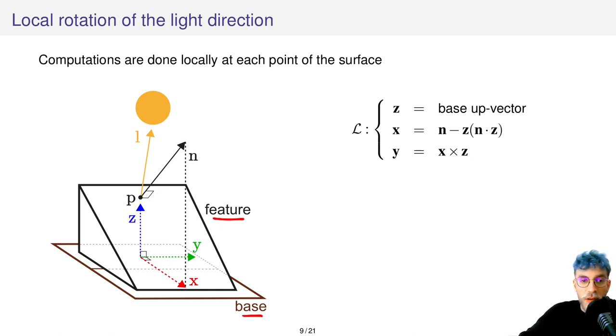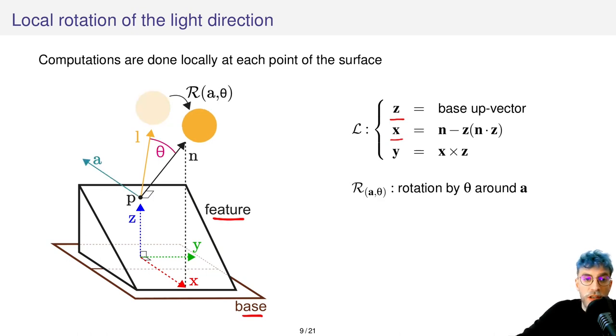It is constructed in a way that depends on both the feature and the base. Its z-axis is the base up vector and its x-axis is the projection of the normal onto the base. Once constructed, we can project all our vectors in it and perform our rotation operation.